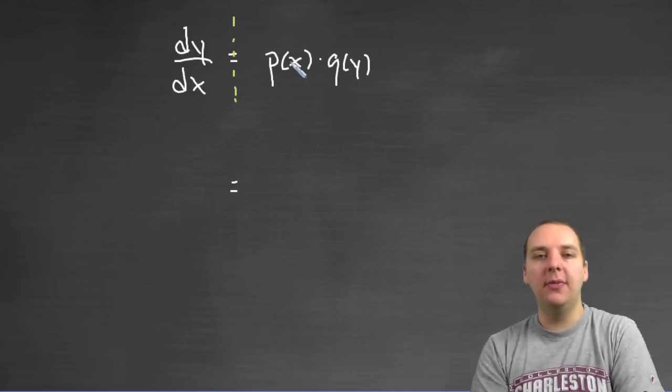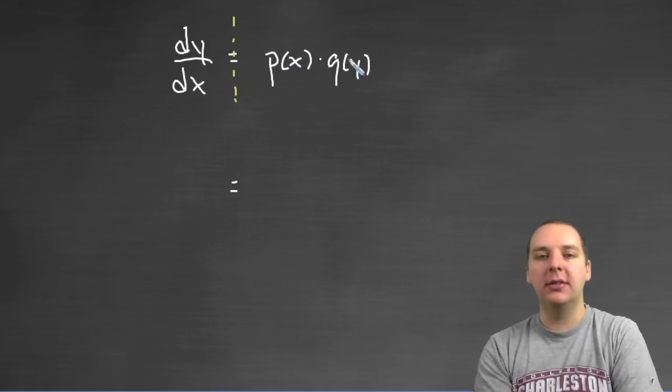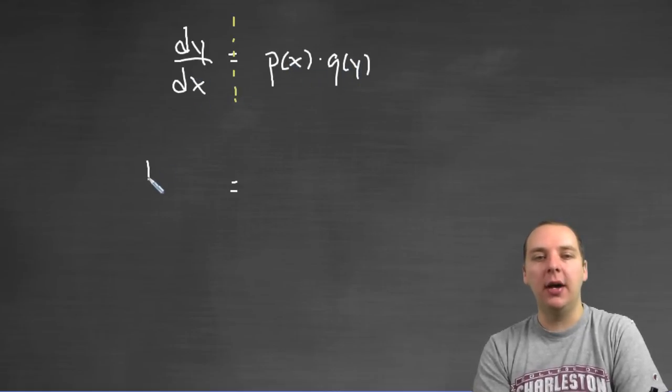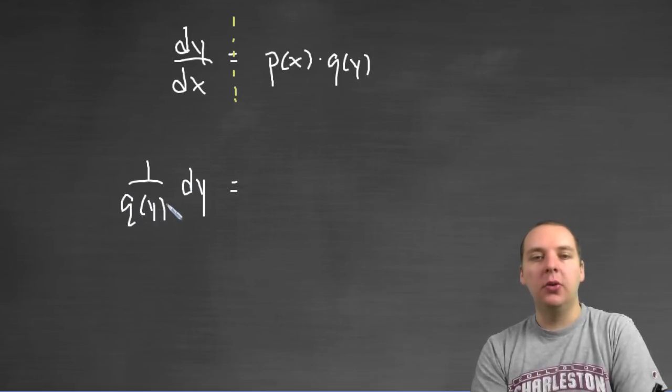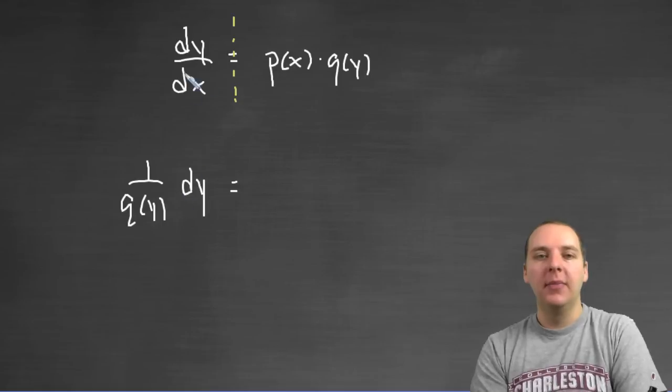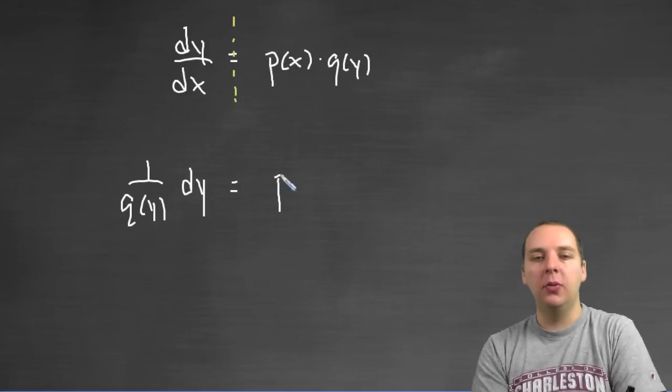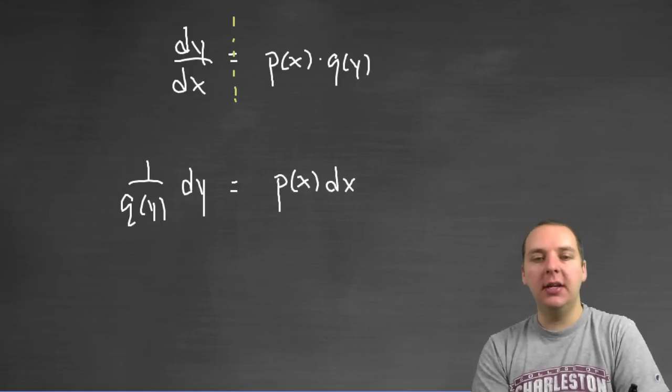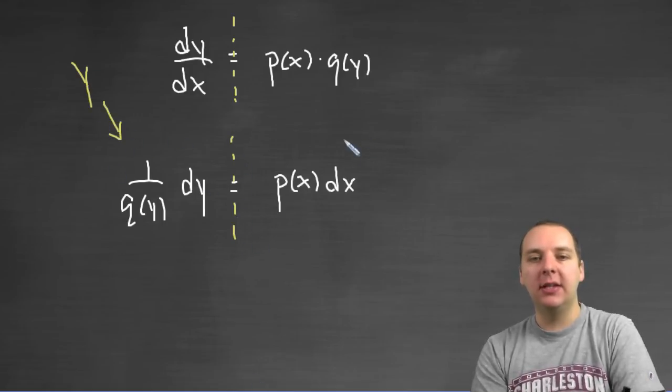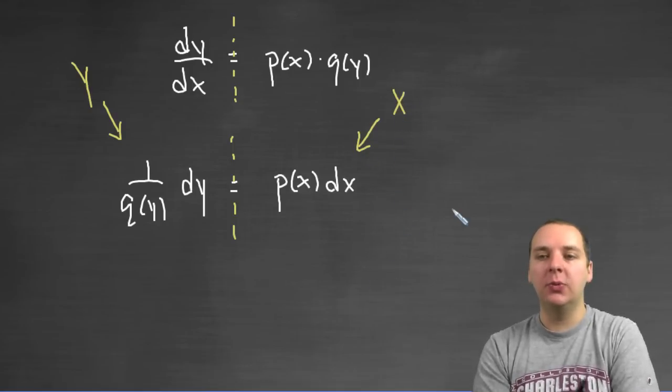Specifically, you could write it like this. Let's divide the Q of Y to get it over here with the dy, so you have 1 over Q of Y dy. So you'll only have Y's on the left, and let's take that dx and multiply him to the right to be over here with the P of X. And so as the name suggests, these variables have been separated. You have Y's on this side and you have X's on this side.